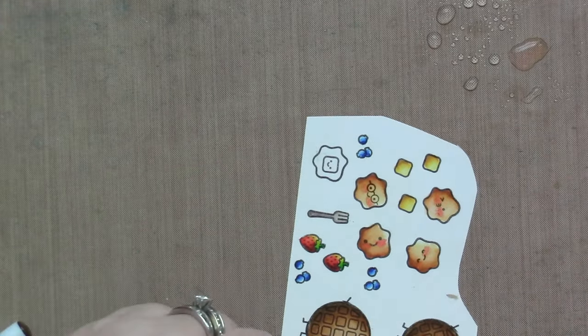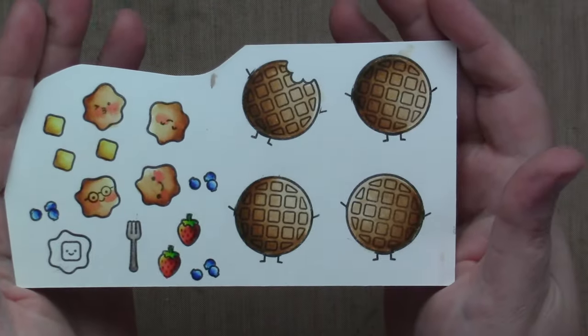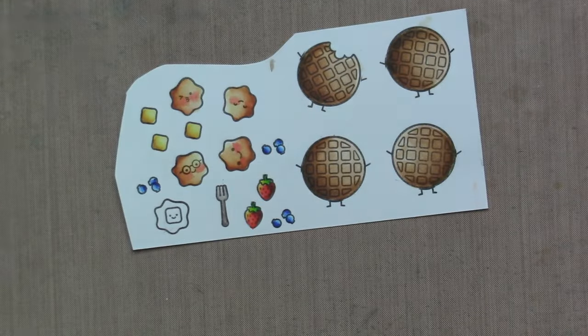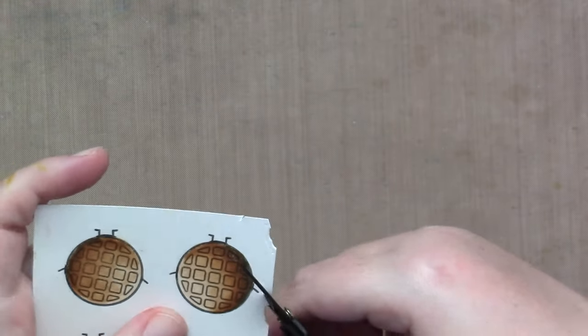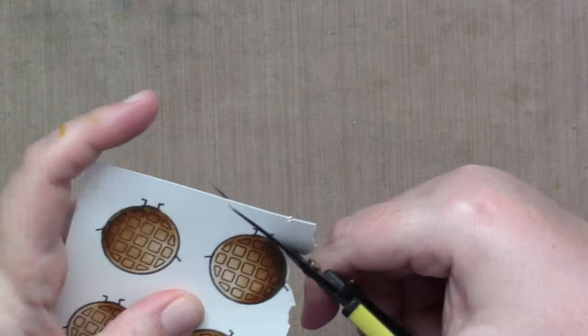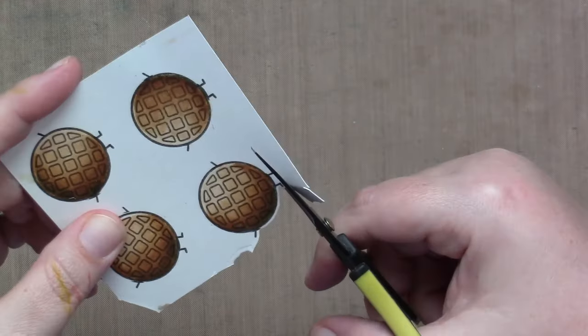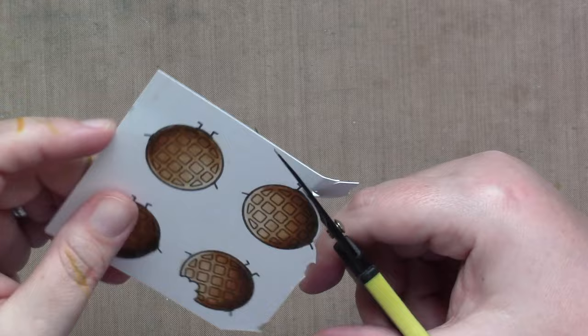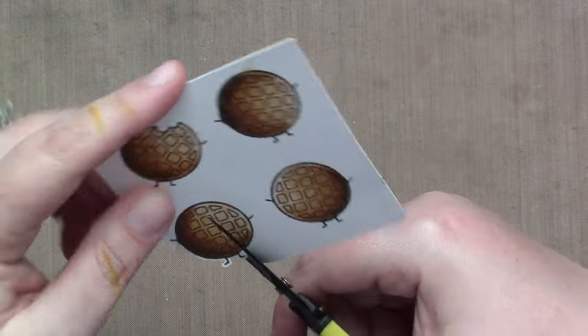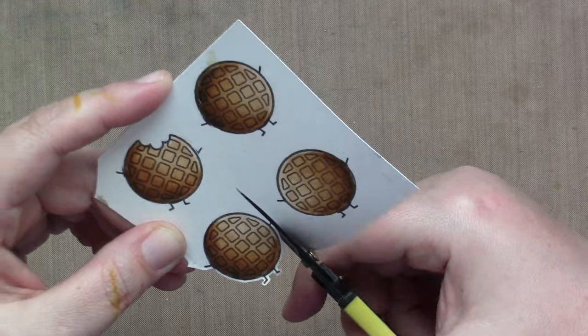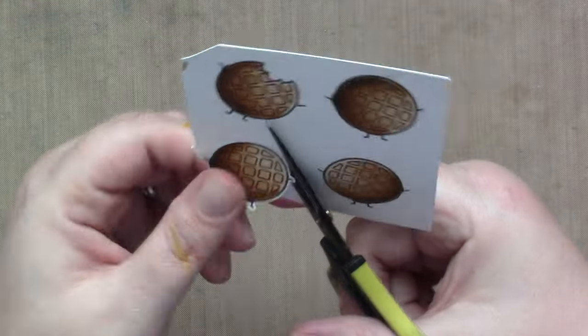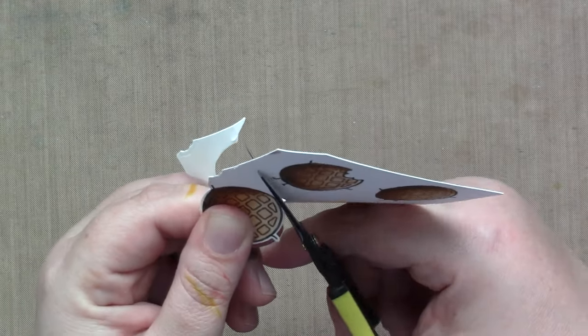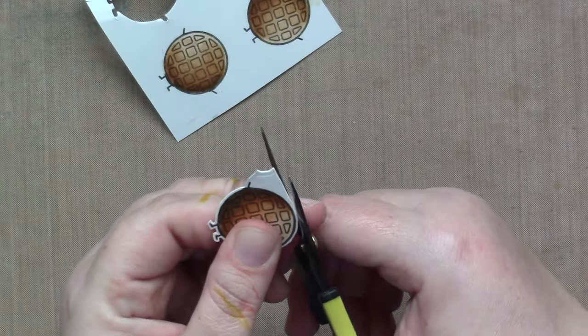Next I die cut all of my images except for these waffles because I added the arms and legs, so there is no coordinating die. I'm going to show you how I fussy cut them out. It did not take long at all. I'm mostly just moving my paper, I'm not moving my scissors. Just move the paper towards the scissors. That's how I cut them all out.